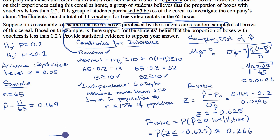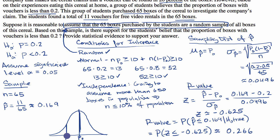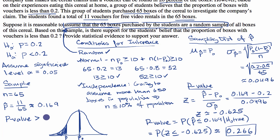Let's make sure we understand what we just did. If this is the assumed sampling distribution of the sample proportions where the null hypothesis is true, we got a result where our p-hat happened to be at 0.169. What's the probability of getting a result that far below the true proportion or further? That's what we calculated — almost a 27% probability. When we compare our p-value to our significance level, we see that 0.266 is clearly greater than 0.05.